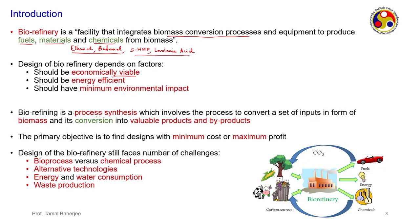It should be economically viable, considering the cost of biomass, pretreatment cost, and the choice between thermochemical and biological conversion. Thermochemically you do gasification to convert to syngas and then products; biologically you ferment and convert to sugar and then to alcohol. It should be energy efficient, with minimum cooling or heating requirements, and should have minimum environmental impact — minimizing NOx, SOx, and CO2 generation.